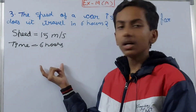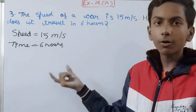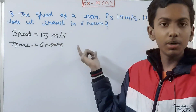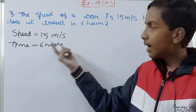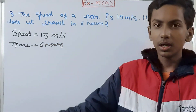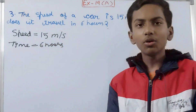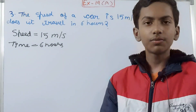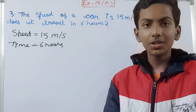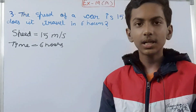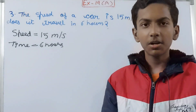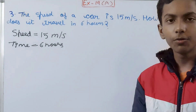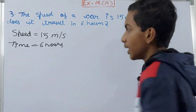It is more convenient to convert meters per second to kilometers per hour, rather than converting hours to seconds. Converting hours to seconds involves a lot of calculation and more digits, increasing the chance of error. So we'll convert 15 meters per second to kilometers per hour.